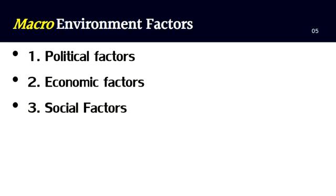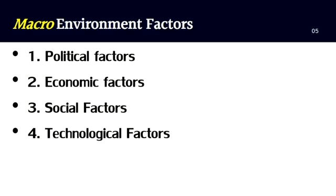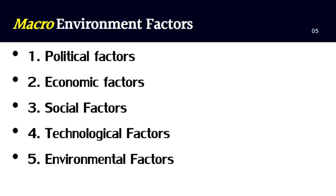Number three, social factors — these include the shared beliefs and attitudes of the population. These factors are population growth, age distribution, health consciousness, career attitudes, and so on. Number four, technological factors — these affect management and marketing in three ways: new ways of producing goods and services, new ways of distributing goods and services, and new ways of communicating with target markets.